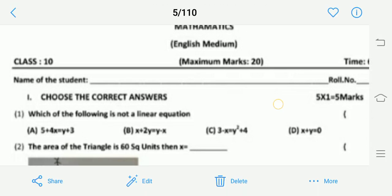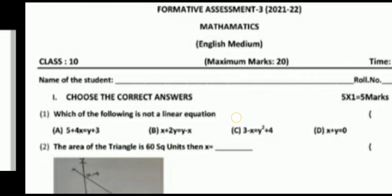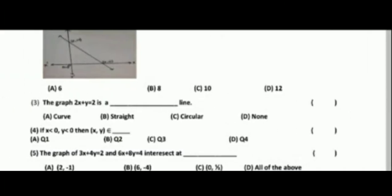Second question. Area of the triangle is 60 square units. Then x equal to: option A 6, option B 8, option C 10, option D 12.